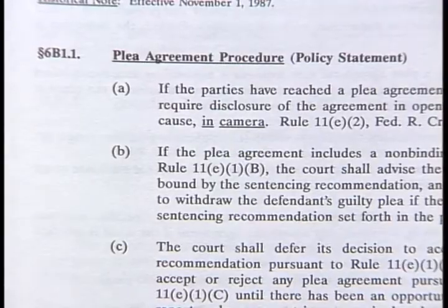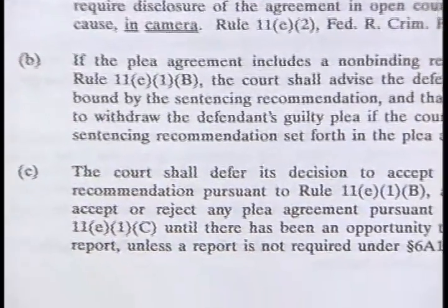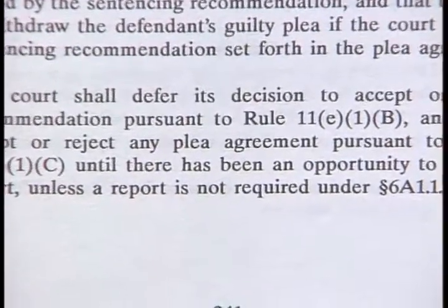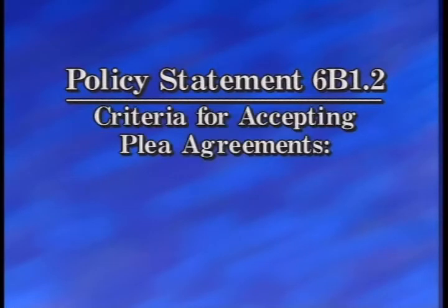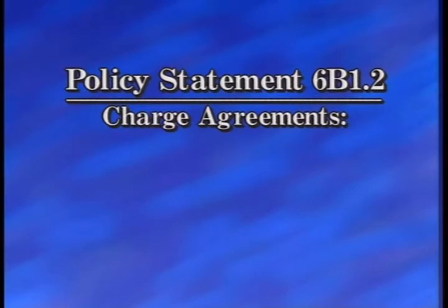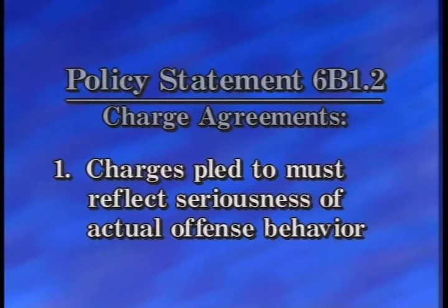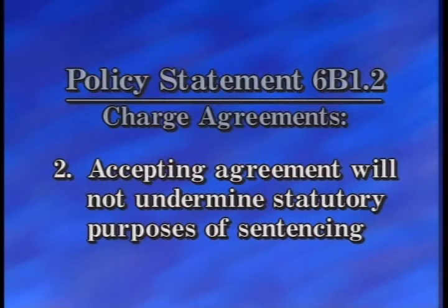Policy Statement 6B1.1C advises courts to defer acceptance or rejection of a plea agreement until there has been an opportunity to consider the pre-sentence report. Policy Statement 6B1.2 contains criteria for determining whether to accept plea agreements. In the case of charge agreements, the Commission suggests the court not accept the agreement unless it makes two determinations on the record: first, that the remaining charges adequately reflect the seriousness of the actual offense behavior; and second, that accepting the agreement will not undermine the statutory purposes of sentencing.